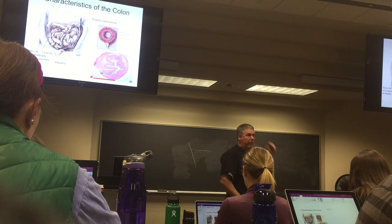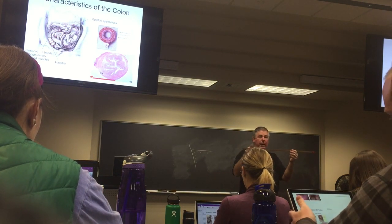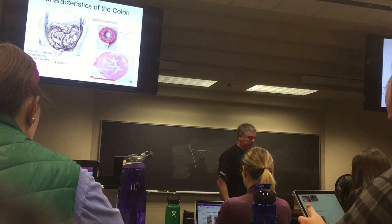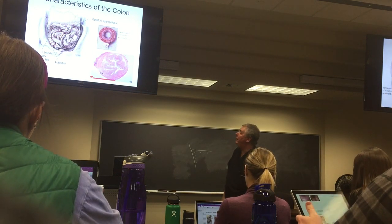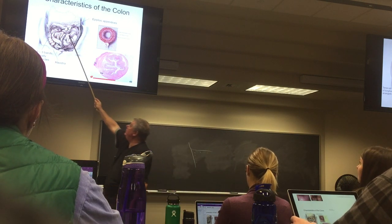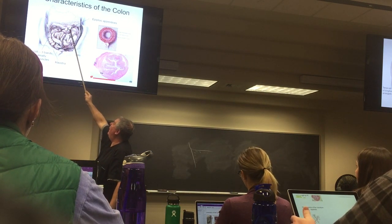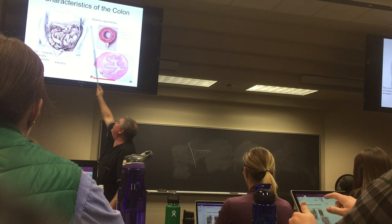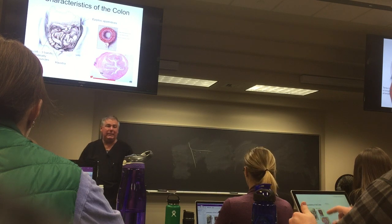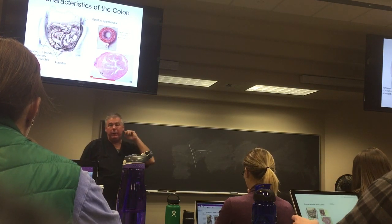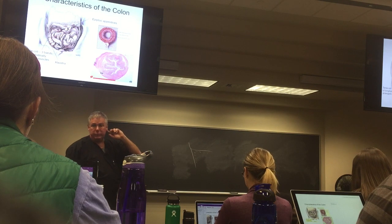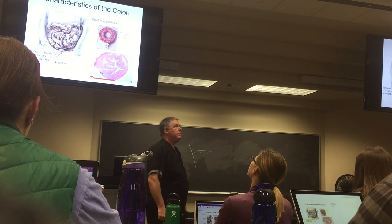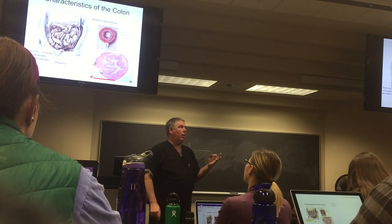The bumpiness is called haustra. If you look at a stool specimen, it's lumpy — that's because of the haustra. Finally, there are fat appendages hanging off the taenia coli called epiploic appendices. They look like little ear lobes and are made of yellow fat. So those are the three characteristics of the colon: taenia coli, haustra, and epiploic appendices.